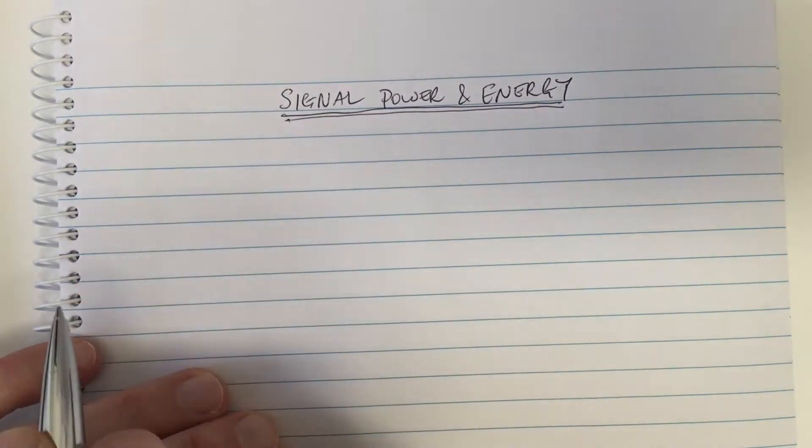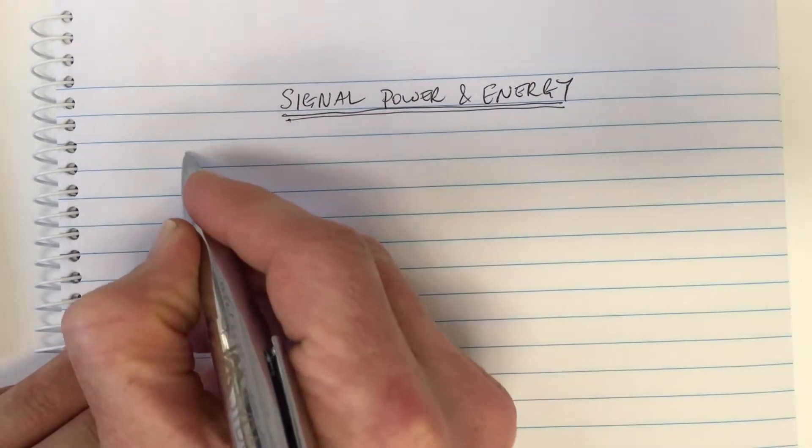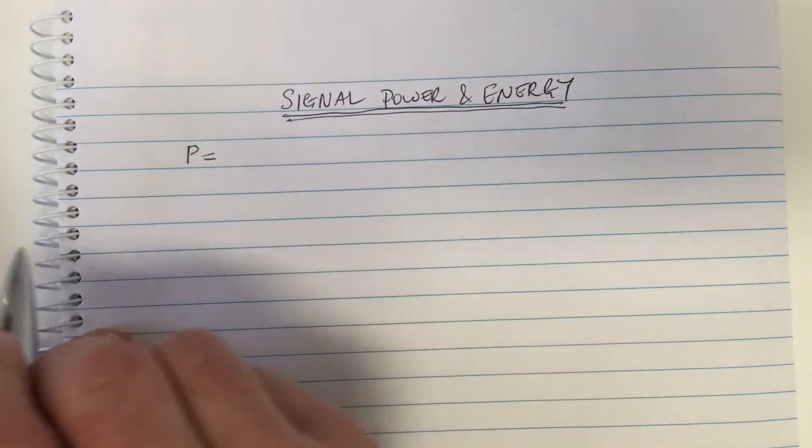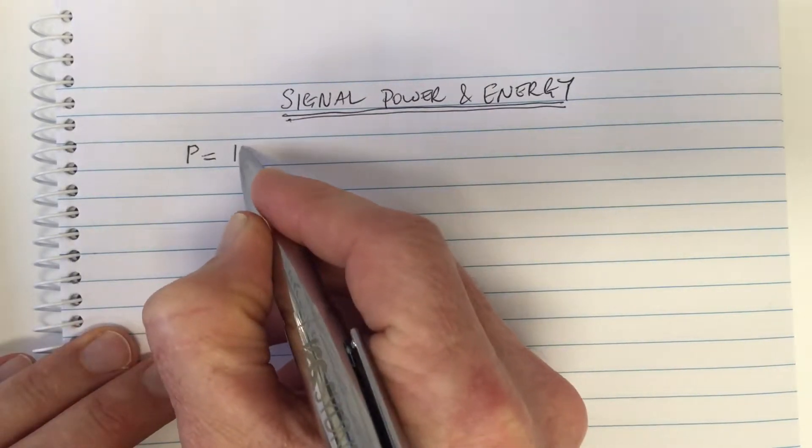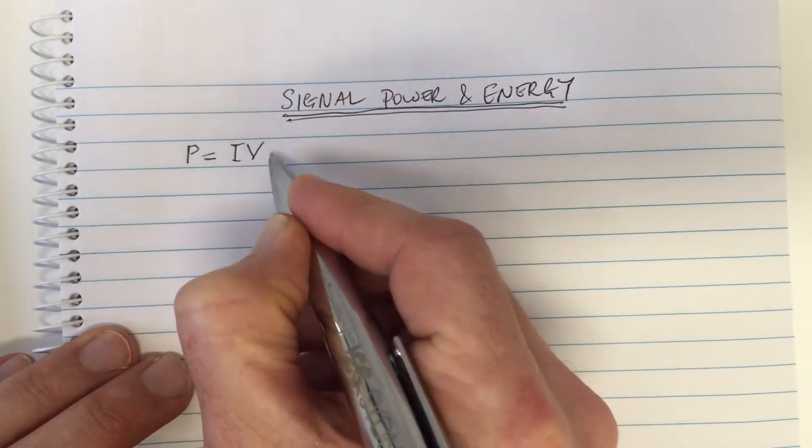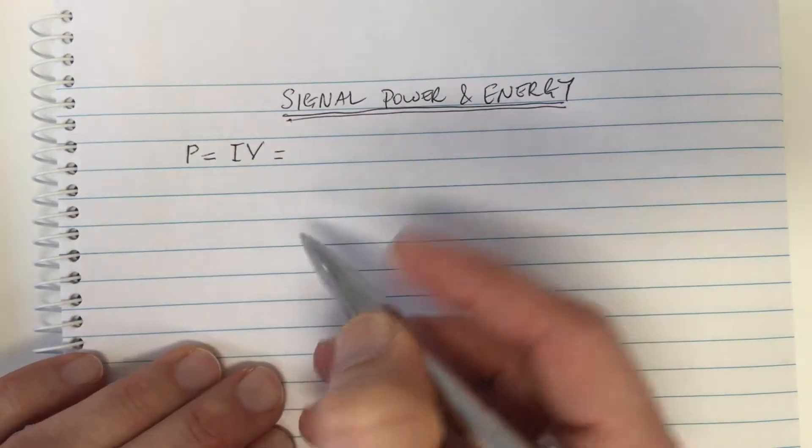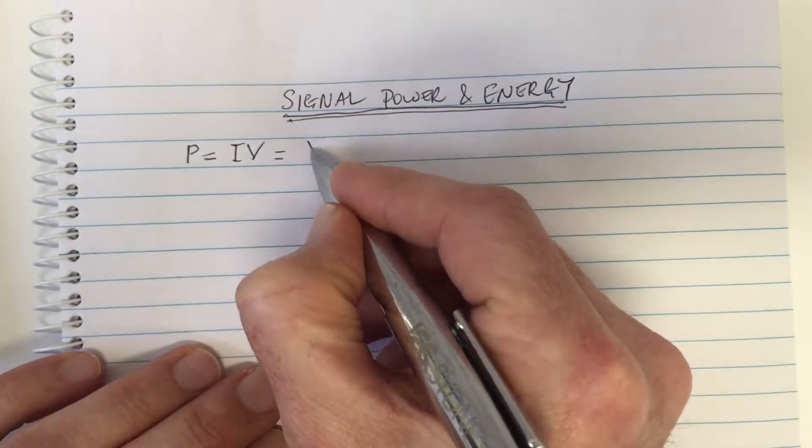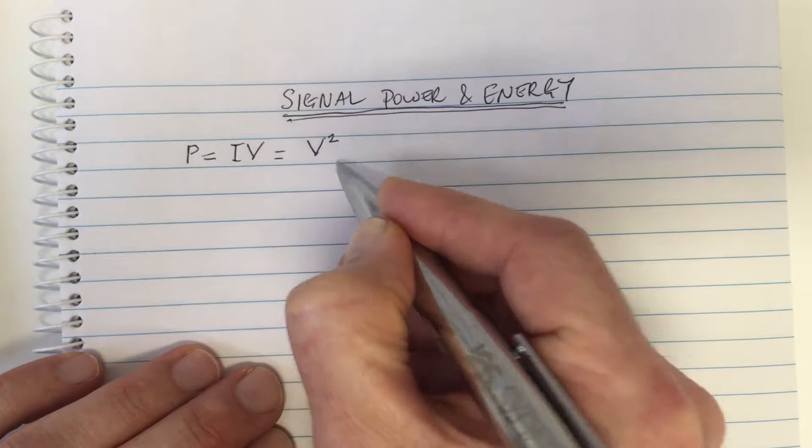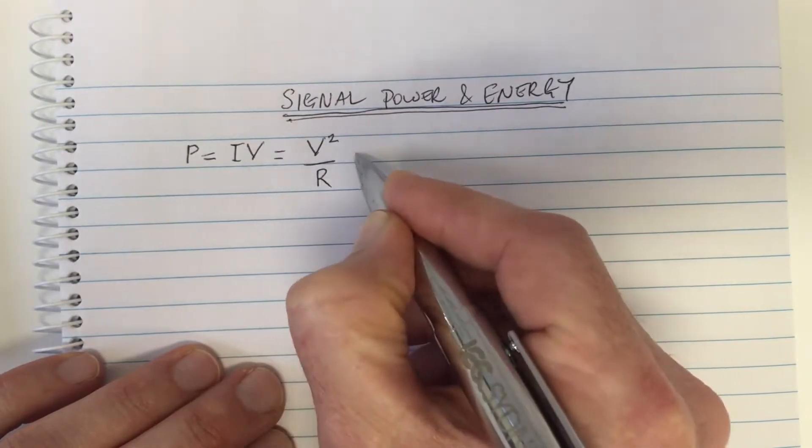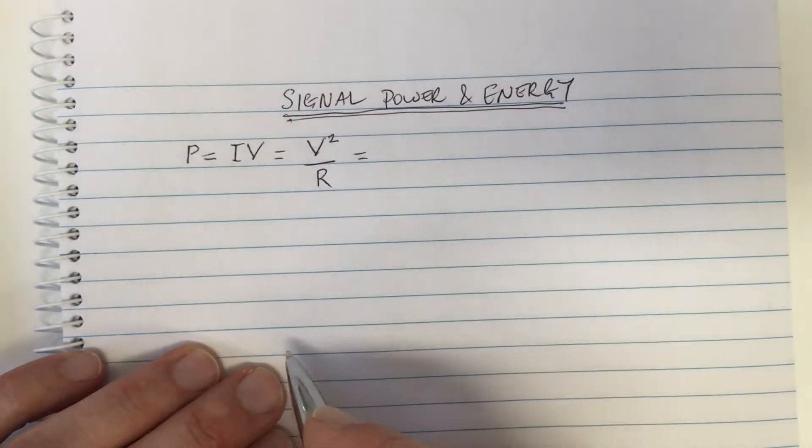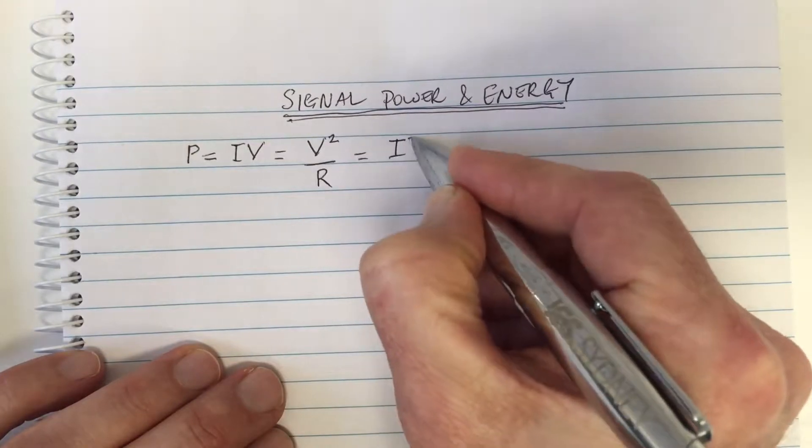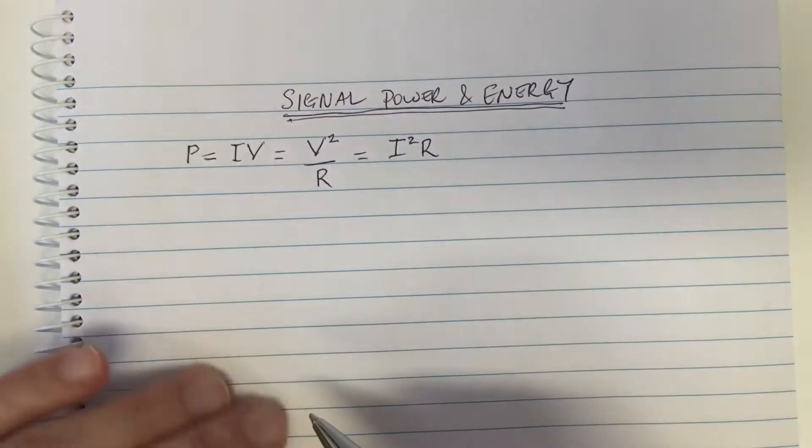So here we're going to discuss signal power and signal energy and we'll start with an example of electric circuits. I think you'll recall that the power in an electric circuit is the current times the voltage, and if this is over a resistor then because V equals IR, that's the same as the square of the voltage divided by the resistance or the square of the current times the resistance.